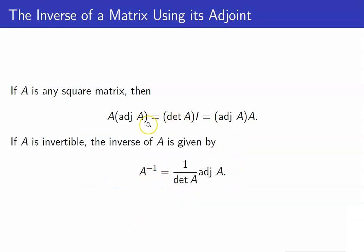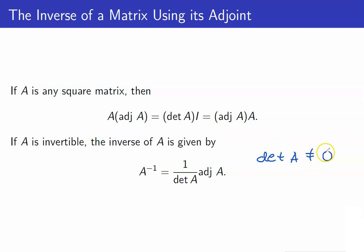If A is invertible, then the inverse of A is given by 1 over det(A) times adjoint of A. Take note that when I derived this, my assumption was that det(A) is not equal to 0, which is equivalent to A being invertible. This theorem tells us how to compute the inverse of A using its adjoint and its determinant. However, take note that this theorem is not an efficient way to find the inverse of a matrix.